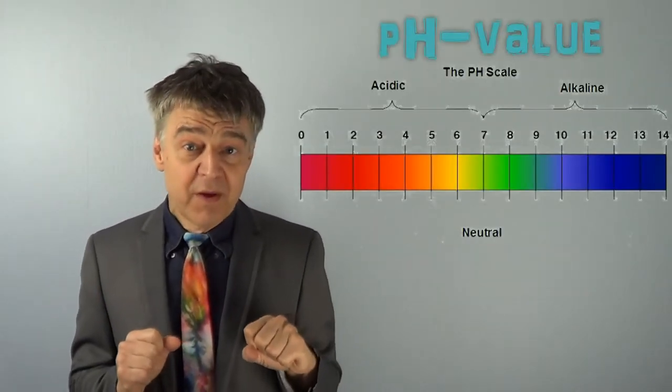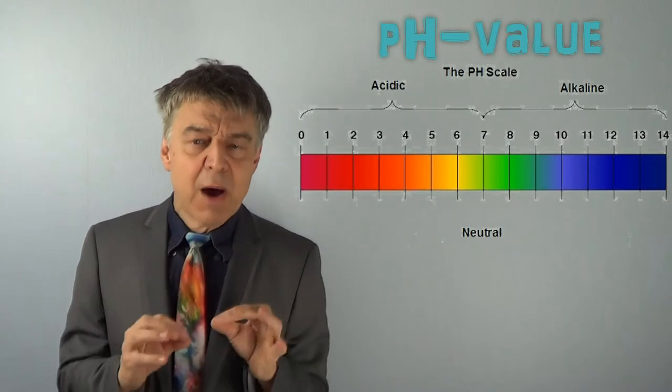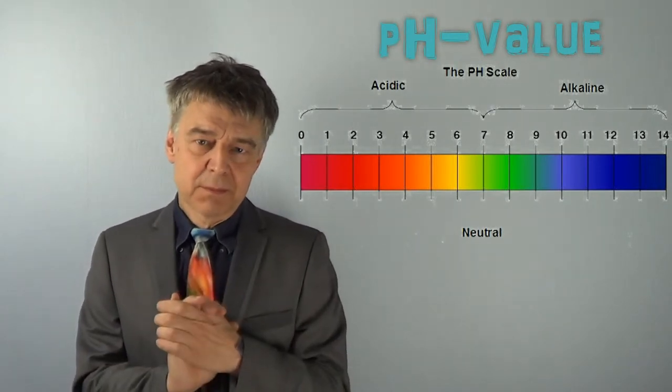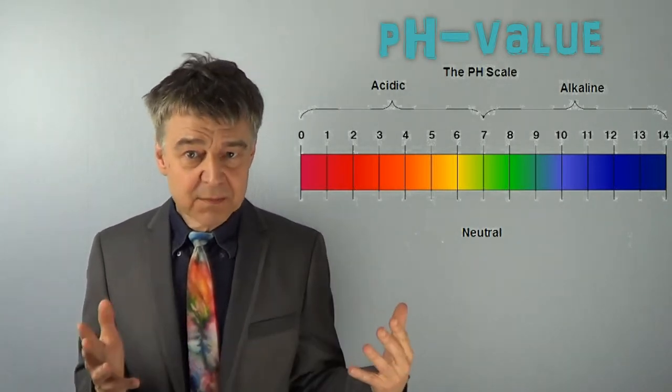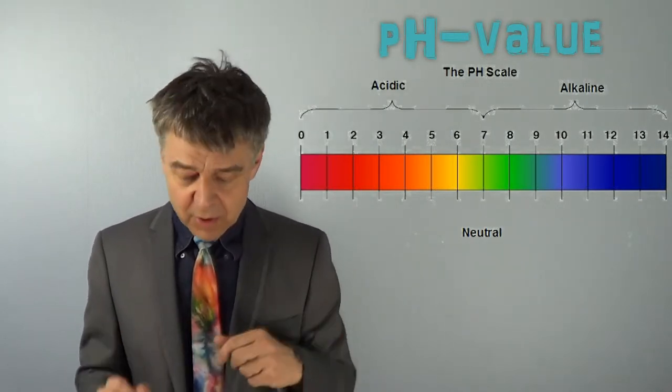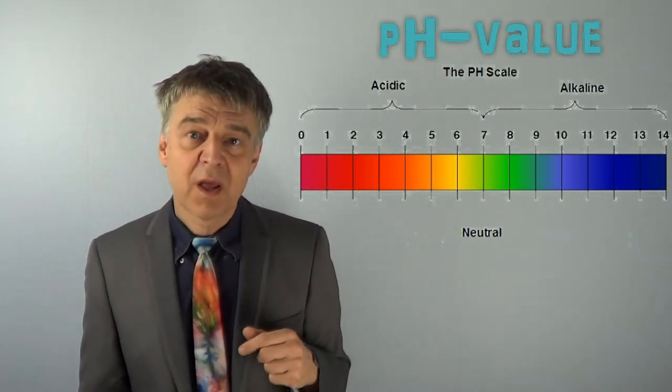Whenever chemists deal with reactions in water, they measure the so-called pH value. This indicates how acidic the solution is. pH 7 is not acidic. The smaller the value, the more acidic. The pH value may be measured electrically or with colored paper.